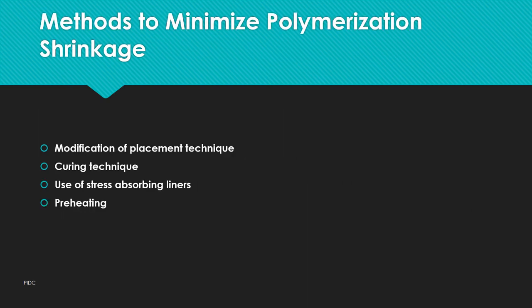Methods to minimize polymerization shrinkage include: modification of placement technique, curing technique, use of stress-absorbing liners, and preheating. The incremental layering technique is one placement method — by using incremental placement, the bonded-to-unbonded ratio is reduced, and consequently the stress level within the cavity is lower, preserving the bonded area and reducing polymerization shrinkage.